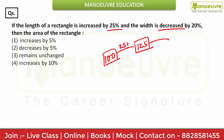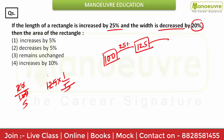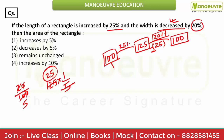Now, decrease 20 percent of 125. 20 percent in fraction form is 1/5. So 125 into 1/5 is 25. You deduct 25 from 125 because it is a decrease, and it makes 100 itself. So from 100 it came back to 100 — no change occurred.